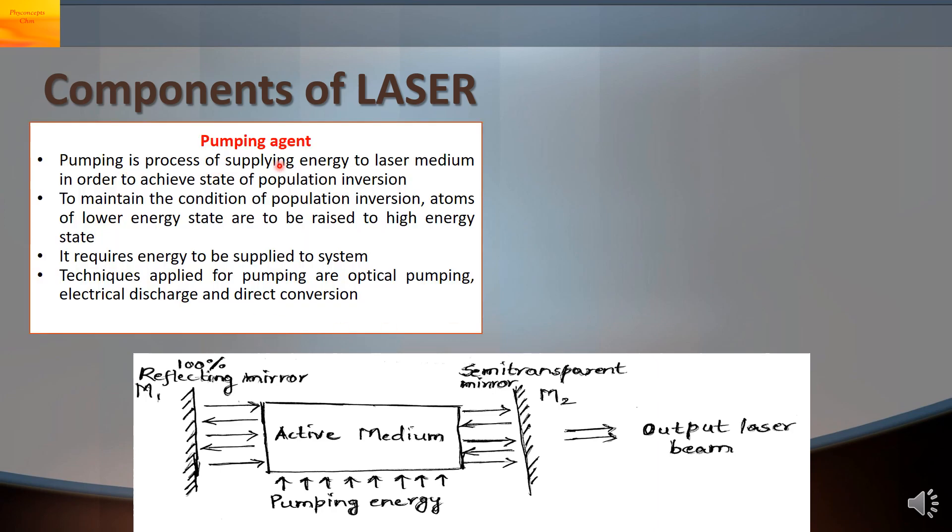Second component is a pumping agent. Pumping is a process of supplying energy. It is an external energy to the laser medium in order to achieve the state of population inversion. To maintain this condition of population inversion the atoms of the lower energy state are to be raised to the higher energy state. So for that we will require energy. Energy has to be supplied to the system.